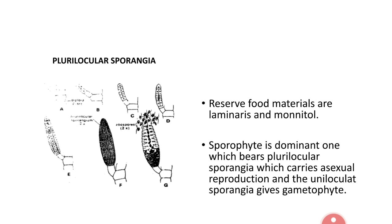The second type of sporangia are called unilocular sporangia. They are also developed on the Ectocarpus sporophyte plant stage. As the name implies, they are single-celled or single-locular structures. They show a single nucleus and cytoplasm. Through a number of divisions, unilocular sporangia develop 32 to 64 haploid zoospores. These haploid zoospores emerge from the unilocular sporangia and develop the second stage of the Ectocarpus life cycle, which is the gametophyte stage. With this, asexual reproduction is complete.